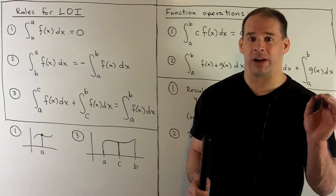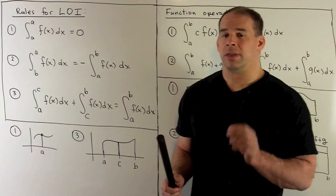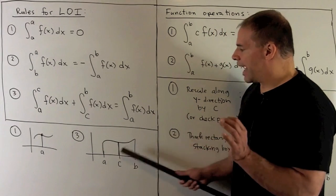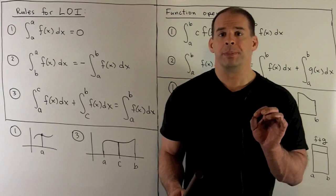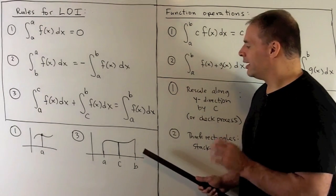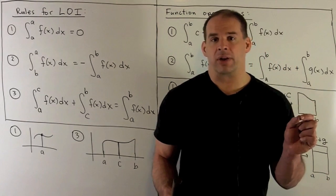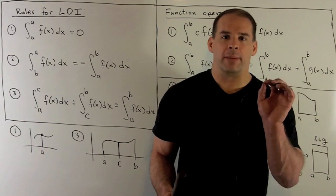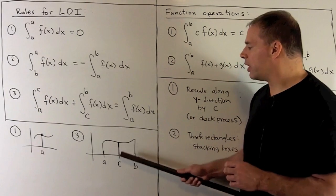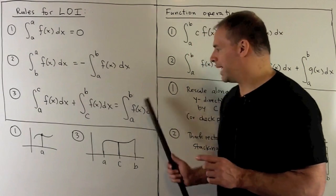Third rule: if you have your interval a, b and you want to split up your interval, you get the same area for the whole region if you split into two regions and add their areas together. One thing about this rule: c doesn't actually have to be in your interval — it just has to be somewhere where each of these terms makes sense. Those are the rules for dealing with the limits of integration.